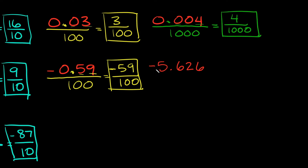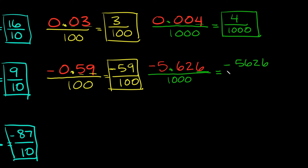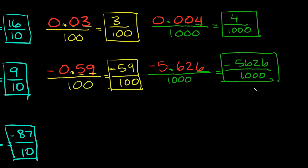And lastly, here we have negative 5.626. Draw a line underneath the whole thing — it ends in the thousandths place, so we'll put a 1,000 in the denominator. Then dropping the decimal, this is going to be equal to negative 5,626 over 1,000. That's your answer.